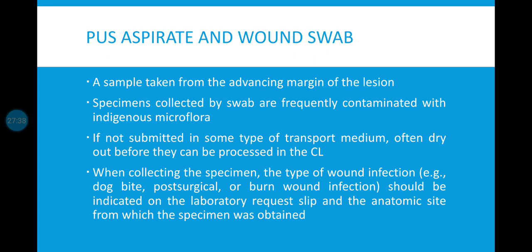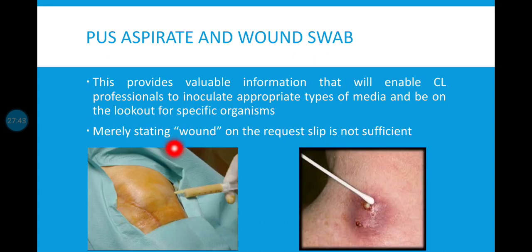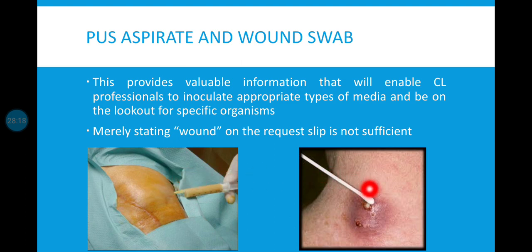You must document the nature of the wound and the anatomical site on the body from which it was collected, because different wounds at different sites commonly yield different pathogens — merely stating 'wound' on the request slip is not sufficient. The image shows a closed abscess where the skin is intact and pus has accumulated inside — you first disinfect and then aspirate. For an open wound where there is insufficient pus to aspirate, you take a wound swab from the advancing margin, which is the outer margin of the wound.